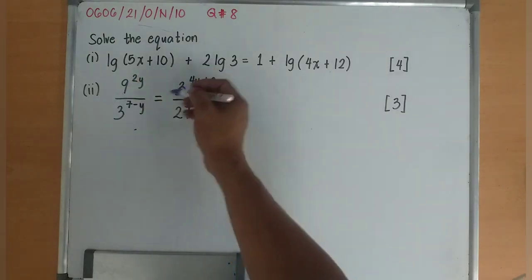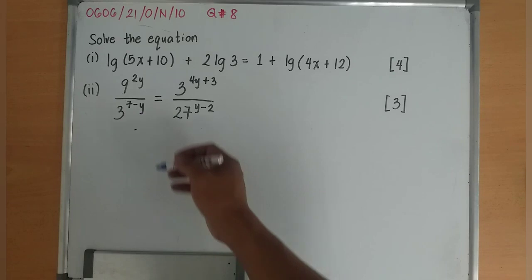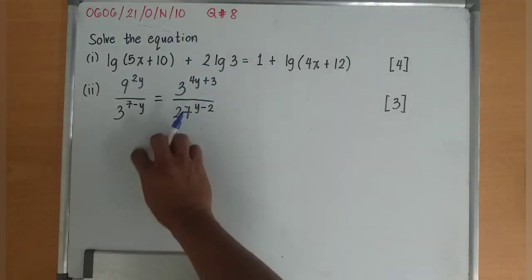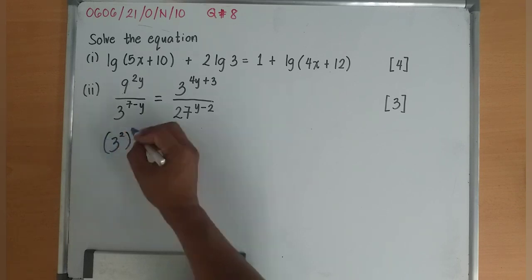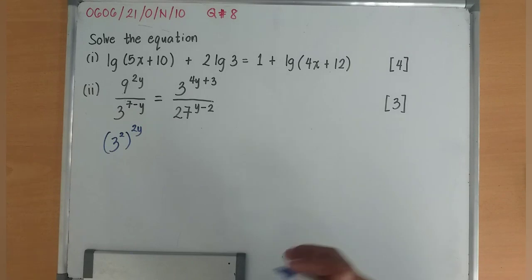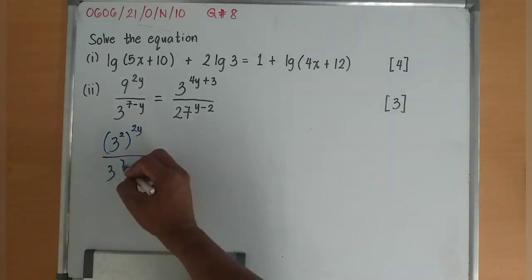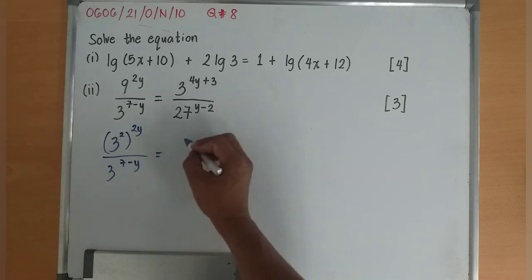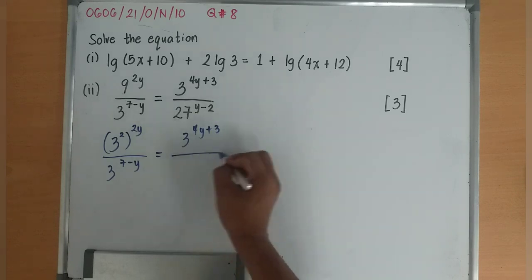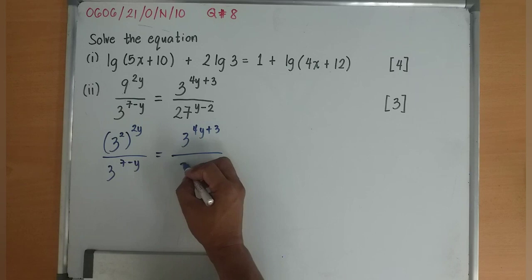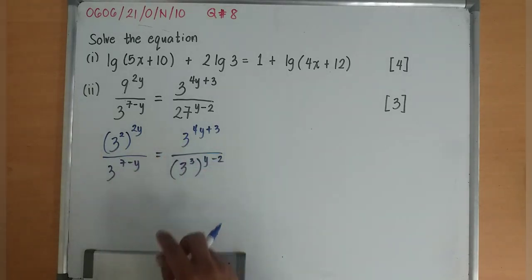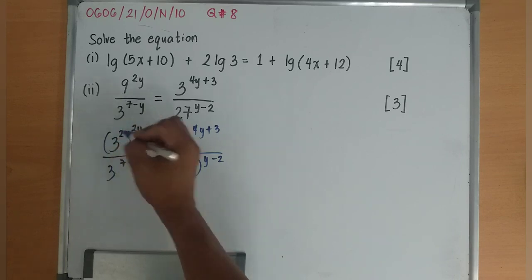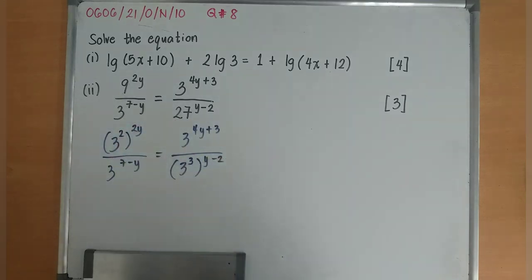9, 3, and 27 are all bases connected with a common base which is 3. So I make the base of this as 3. 3 to the power of 2 to the power of 2y, keep this 3 to the power of 7 minus y equals 3 to the power of 4y plus 3. I'll make the base of this one as 3 also, so it's 3 to the power of 3 to the power of y minus 2. I have base 3, 3, 3, 3.